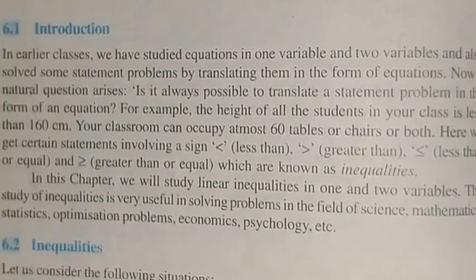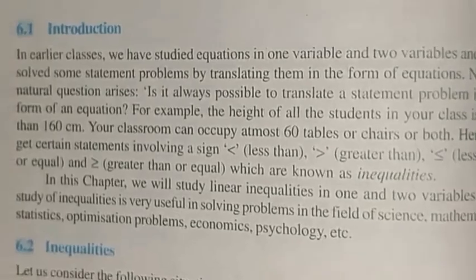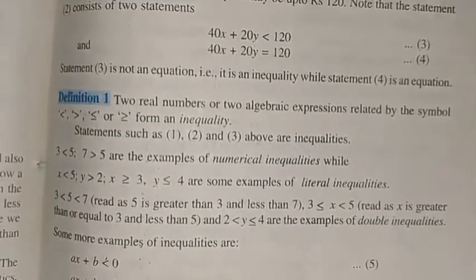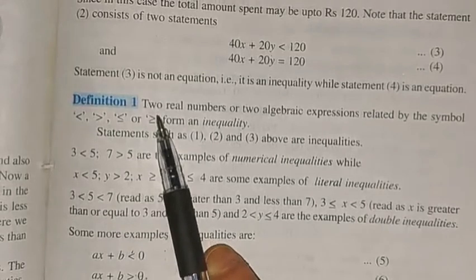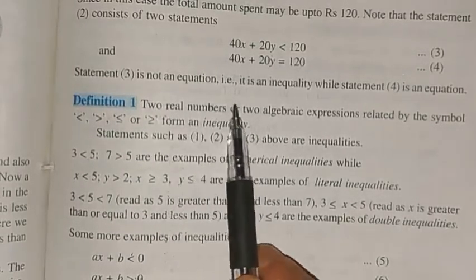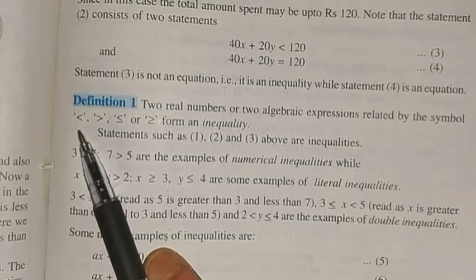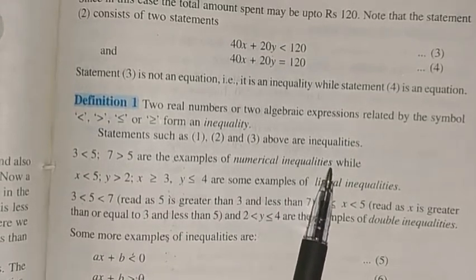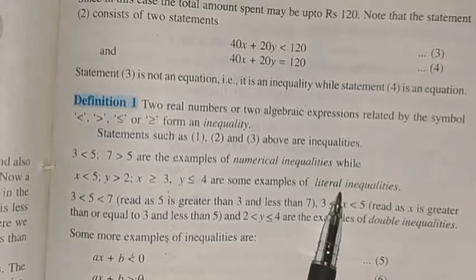Instead of equalities they are called inequalities. These linear inequalities can be in one or two variables. The definition: two real numbers or two algebraic expressions related by the symbols greater than, less than, less than equal to, or greater than equal to form an inequality. For example, 3 is less than 5 or 7 is less than 5 — these are numerical inequalities. Inequalities which involve a variable are called literal inequalities.